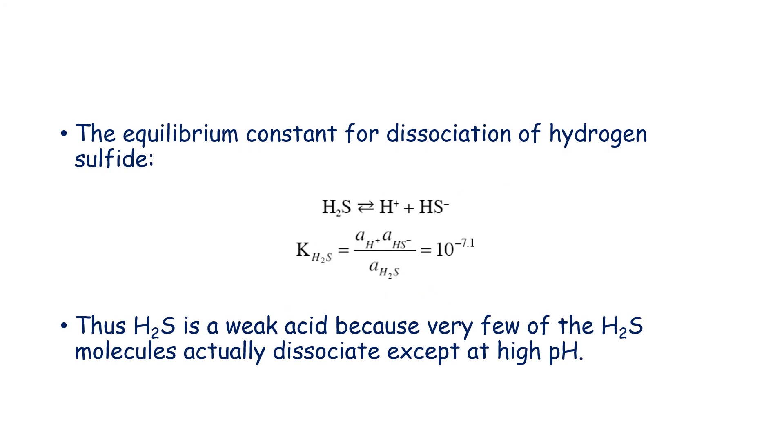The equilibrium constant for dissociation of hydrogen sulfide is written in this form: H2S giving you H plus plus HS minus and that equilibrium constant reduces down to KH2S equals activity of hydrogen into activity of HS minus divided by activity of H2S to give you 10 to the power of minus 7.1. Therefore, H2S is a weak acid because very few of the H2S molecules actually dissociate except at high pH.